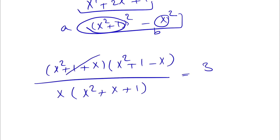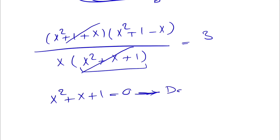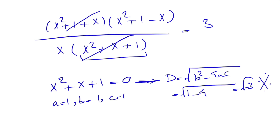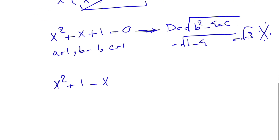We can cancel (x squared plus x plus 1) from numerator and denominator. We verify this factor cannot be zero by checking its discriminant: b² minus 4ac gives 1 minus 4, which is negative (square root of minus 3), meaning no real roots. So the factor is never zero, the cancellation is valid, and we're left with (x squared plus 1 minus x) divided by x equals 3.